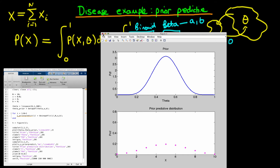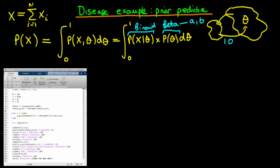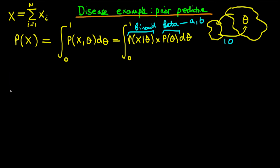Now I want to go through and prove mathematically that the prior predictive distribution has a certain probability distribution known as the beta binomial distribution. If you don't want to watch the entirety of this maths, you can turn off now, but I wanted to include this for completeness.